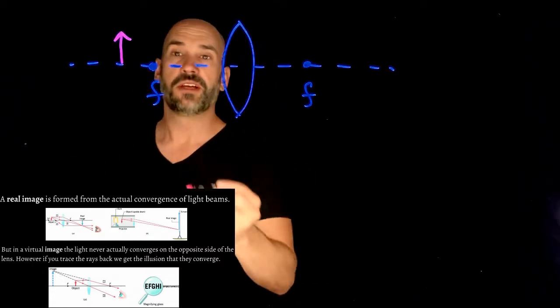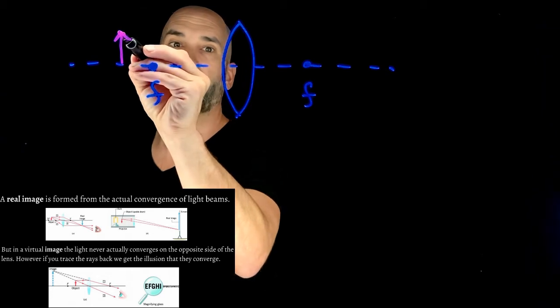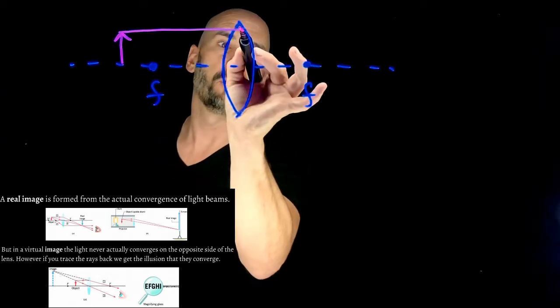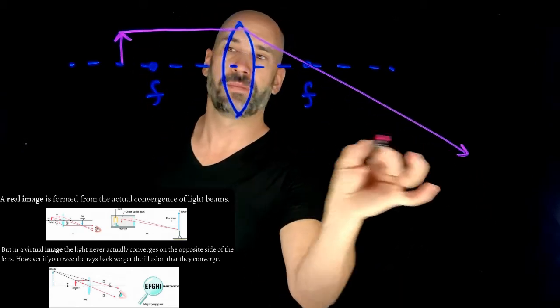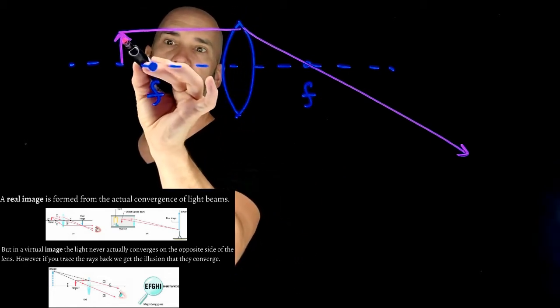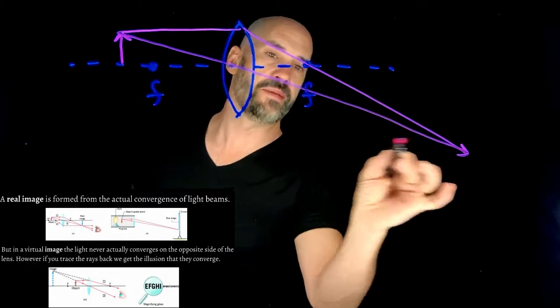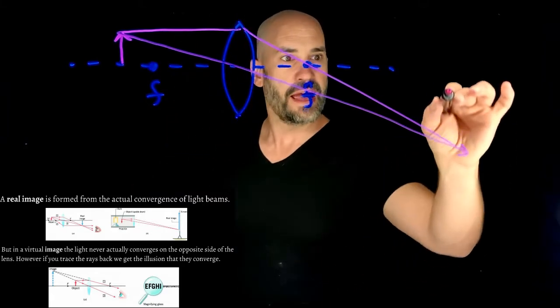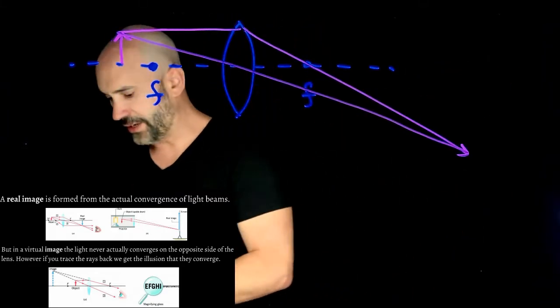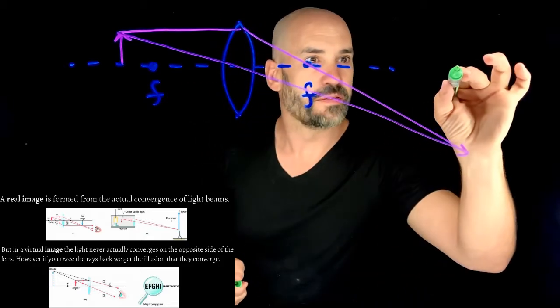And as you know from your special rays, you're going to get one special ray that leaves here and goes through the focal length. And you're going to have another ray that goes through the center. And they meet right here and then this over here is going to be the location of the image.